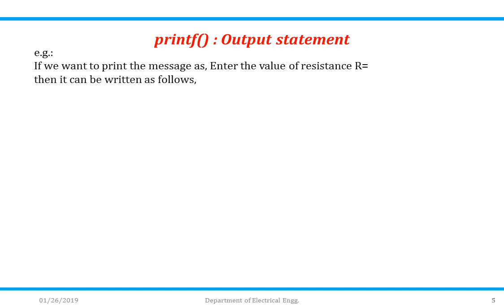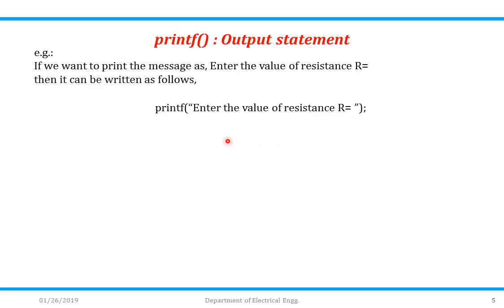Let us take one example. Suppose I want to print the message: enter the value of resistance r equal to. Whatever you have to print should be within double quotes. So when I write printf("enter the value of resistance r equal to"); the output screen will show: enter the value of resistance r equal to.